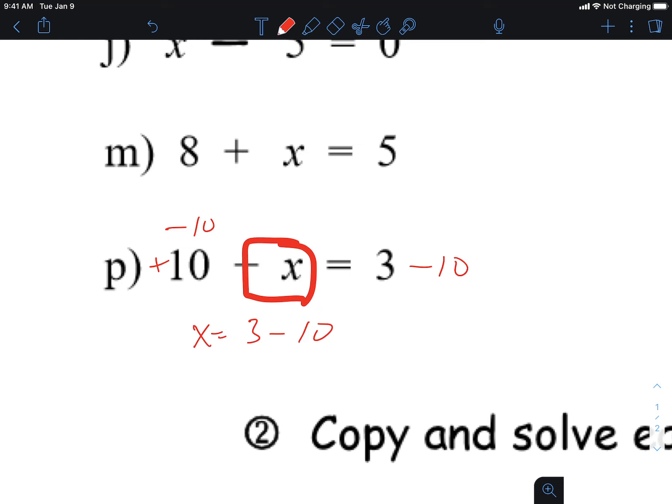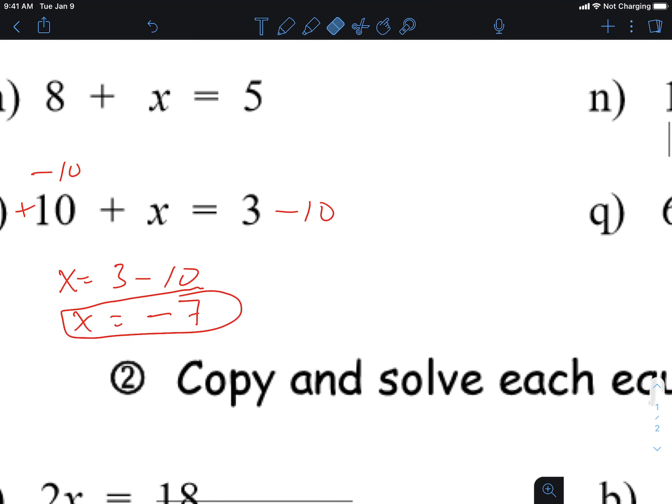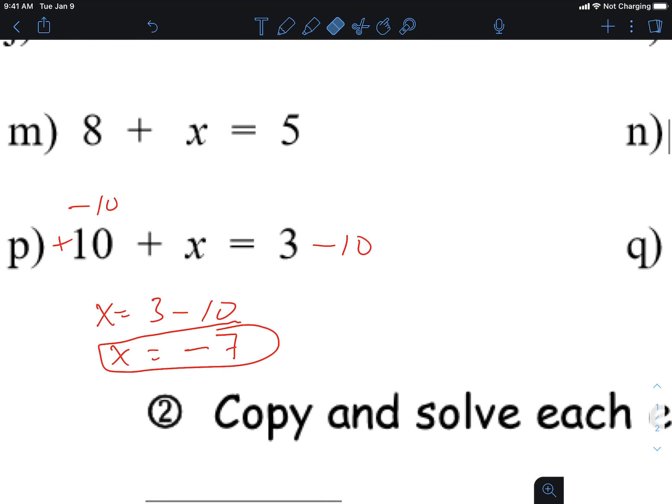What is 3 minus 10? Does that work? How could we check that?